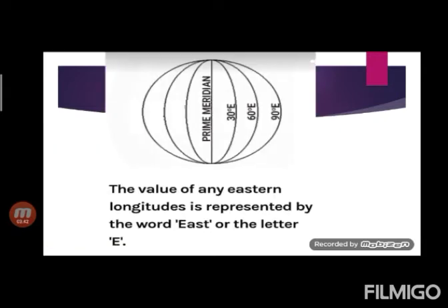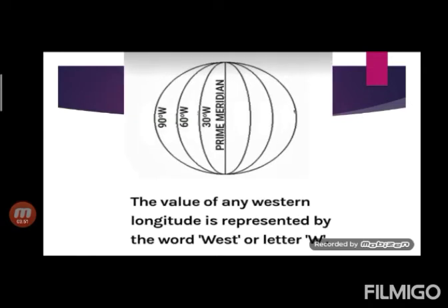Now, meridians in the Eastern Hemisphere are labeled as 10 degree East, 20 degree East, 30 degree East, etc. While in the Western Hemisphere, they are labeled as 10 degree West, 20 degree West, 30 degree West, etc.